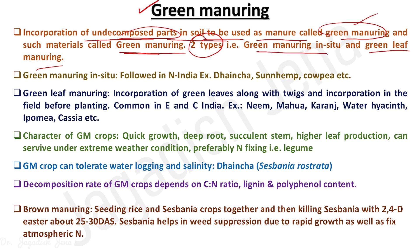In green manuring in situ, we raise the green manuring crops in a certain field and before the flowering stage or early pod development starts, we incorporate that crop into the same field — flooding water there and incorporating it so it decomposes in place. That is called in situ green manuring.